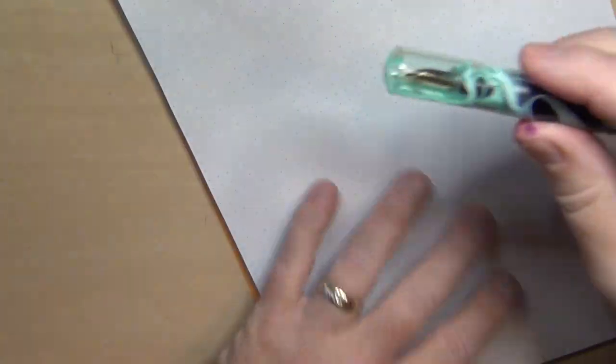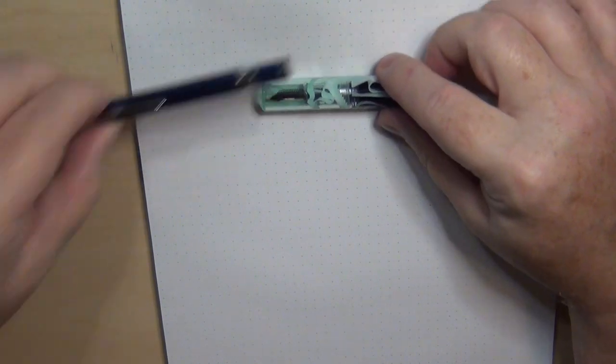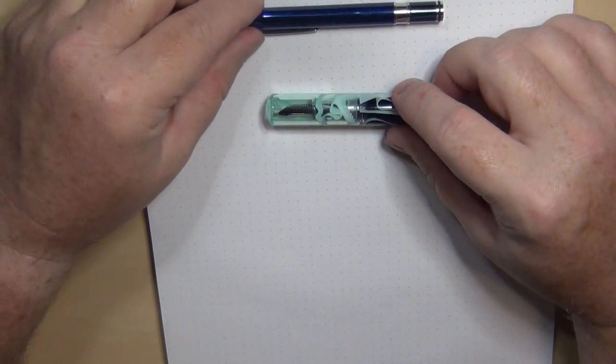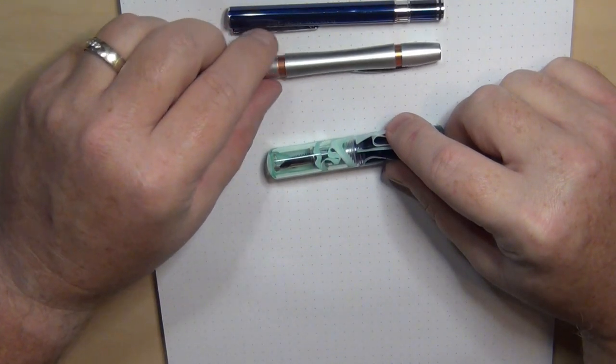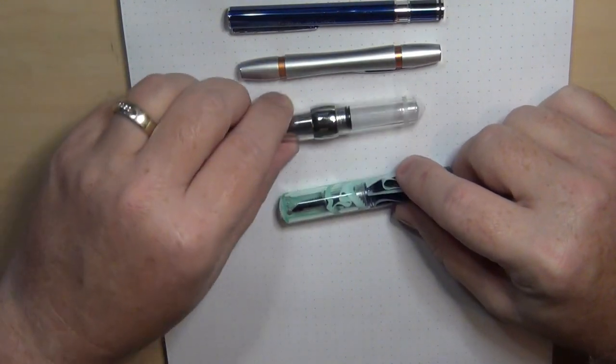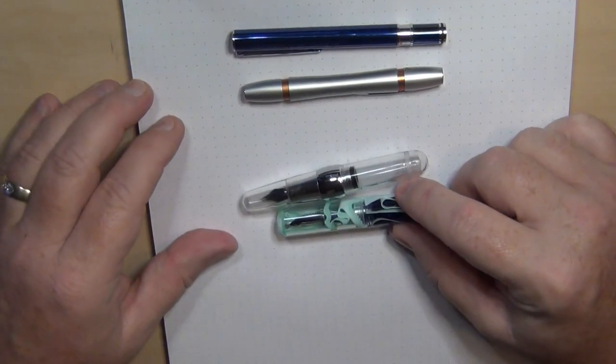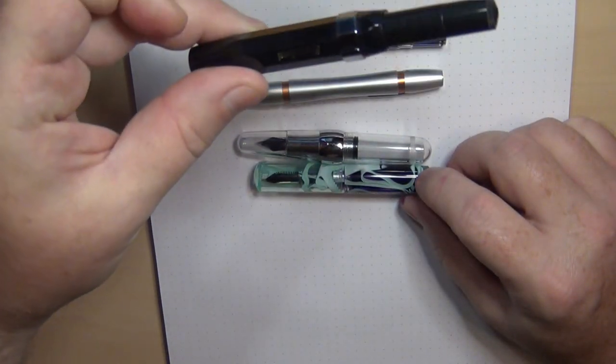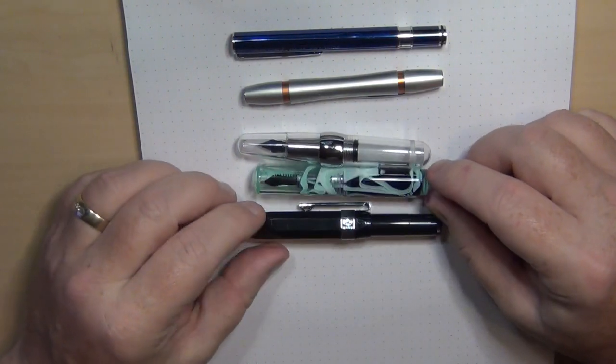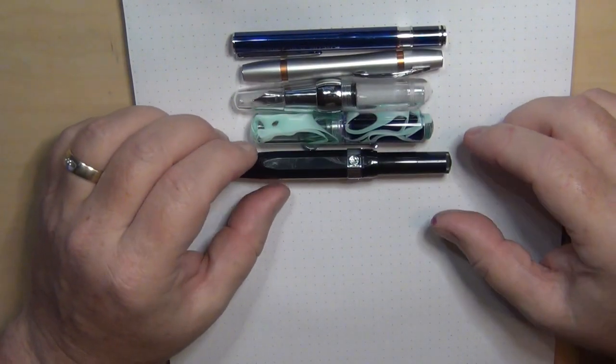I went ahead and got this knowing that I may or may not be a fan of something this small. To give you an idea, I've got other pocket pens, like the Oto Tosh or Tosha as I've heard some people call it, the Oto Rook, the Stipula Passaporto, and of course the Kaweco Sport, to give you an idea size comparison-wise.